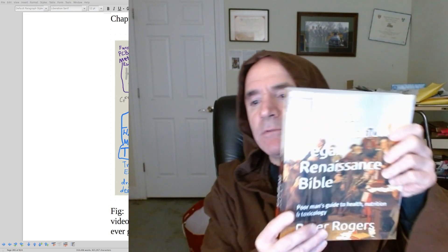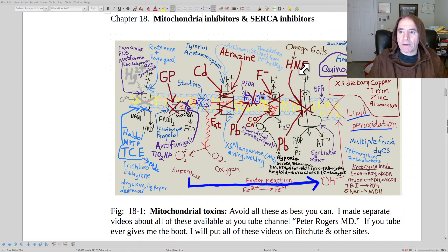Okay, this video is chapter 18 from this book, The Medical Reformation, and what we're going to talk about in this chapter 18 is mitochondrial inhibitors.